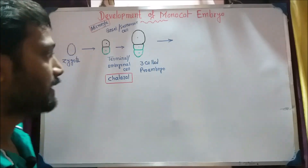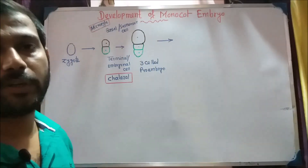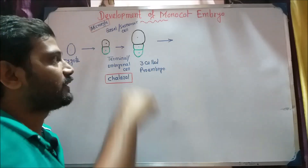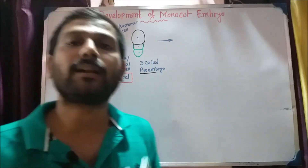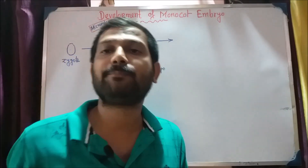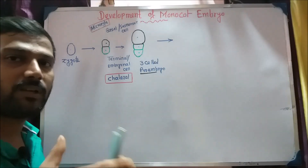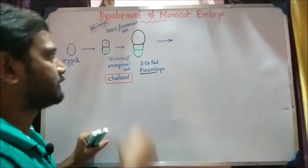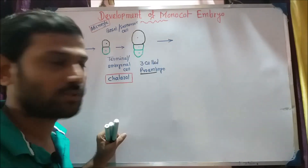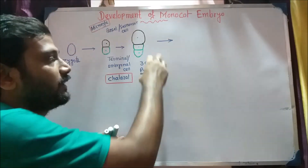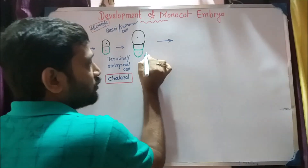Transverse division occurs. This transverse division results in 3-cell structures called the pro-embryo stage.